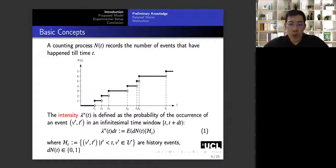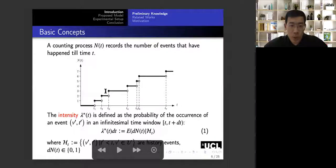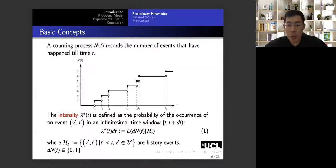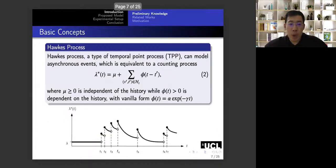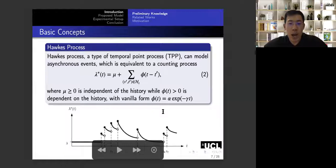So previously, researchers have been trying to use counting process to deal with asynchronous event sequences. And based on the counting process, we can derive the intensity according to equation 1. So intensity is actually defined as the probability of the occurrence of an event in a very small time window. And the Hawkes process can also be used to describe such events.